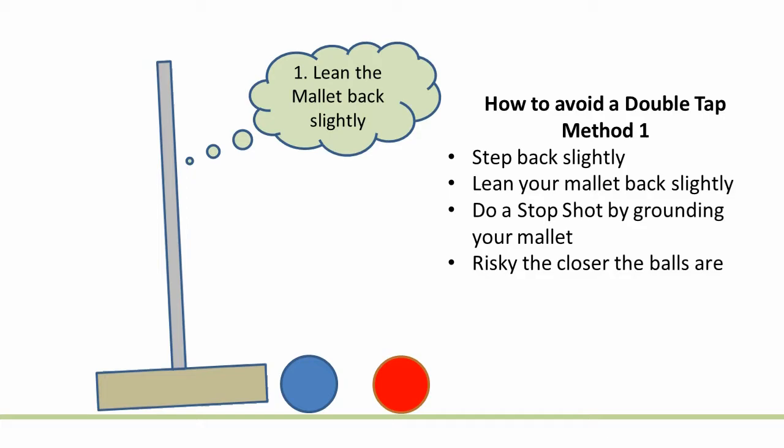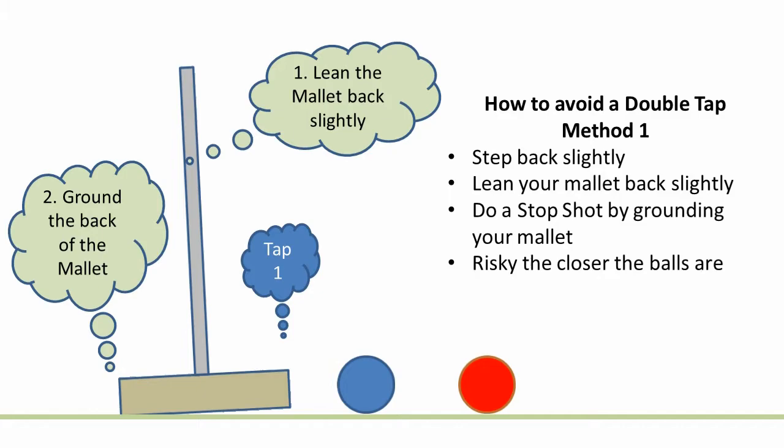Strike the ball and then immediately ground your mallet. The mallet being angled back causes the back end of the mallet to act as a brake, stopping follow through without causing cord damage.